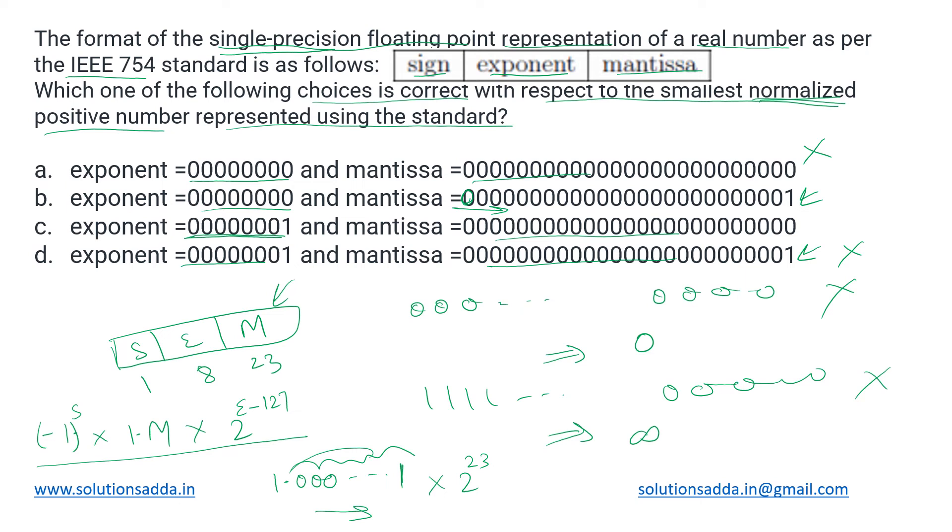Let us check what number does it actually represent. Using the implicit notation itself, the number which this C option will represent is: the sign bit is not given, so we'll assume it to be a positive number because anyway we have to get the positive number, so it has to be one itself. That part is skipped.